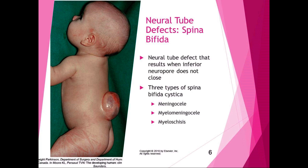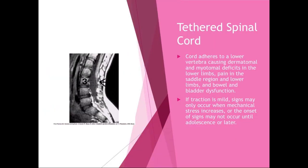Someone with spina bifida could have effects ranging from no use of their legs to being fully functional with minor effects, depending on the extent to which the neural pore didn't close. Spina bifida is caused by a parental nutritional deficiency — specifically folic acid deficiency in either or both parents — so it can be totally prevented. Tethered spinal cord is where the cord adheres to a lower vertebra, causing dermatomal and myotomal deficits in the lower limbs, pain in the saddle region, and bowel and bladder dysfunction.